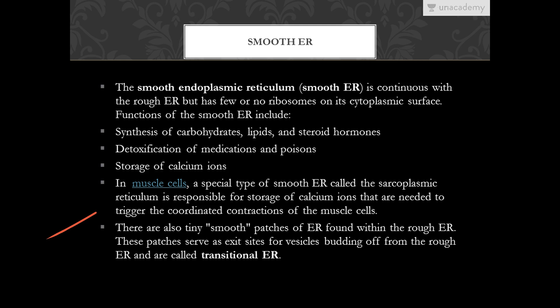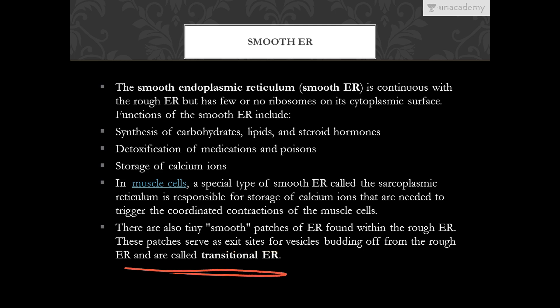There are also tiny smooth patches of ER found within the rough ER. These patches serve as exit sites for vesicles budding off from the rough ER and are called transitional ER. When a vesicle forms inside the rough ER, it exits through these smooth patches, which is why they are termed the transitional endoplasmic reticulum.